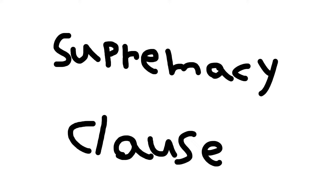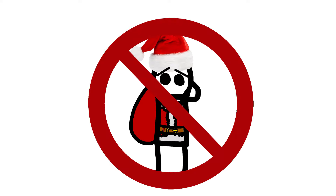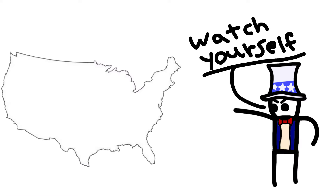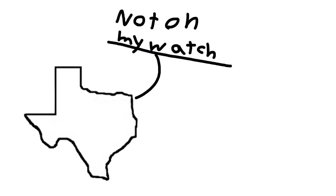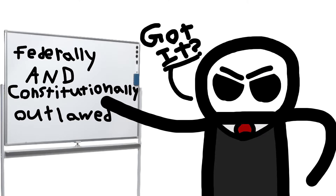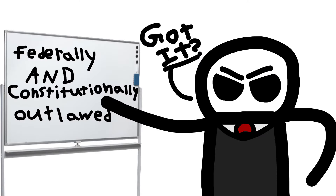Article 6: The Supremacy Clause — not to be confused with Santa Claus. Article 6 states the federal government is the supreme law of the land and that it rules over all state governments. For example, Amendment 13 outlawed slavery constitutionally, meaning if any other state tried to legalize it, it wouldn't end well, because not only does federal law say it's illegal, but the Constitution says it's illegal, meaning you're in violation of the supreme law.